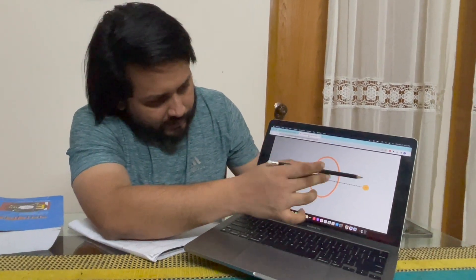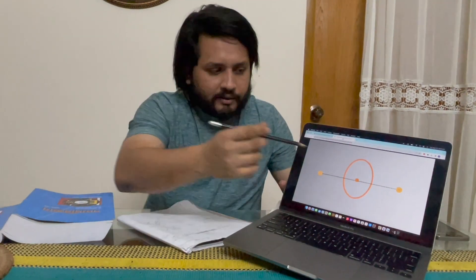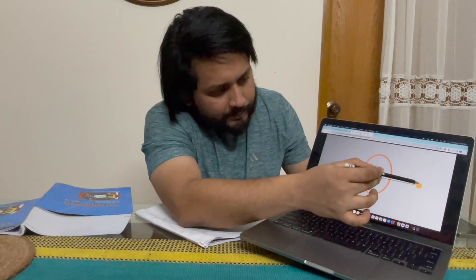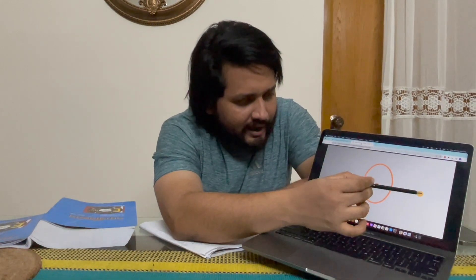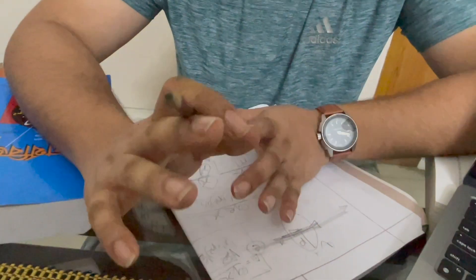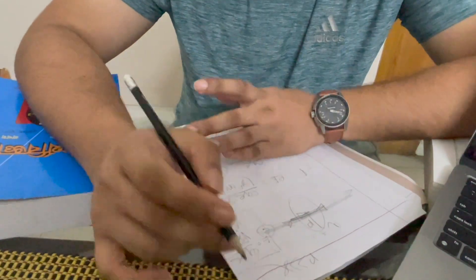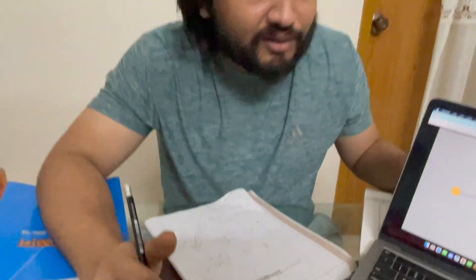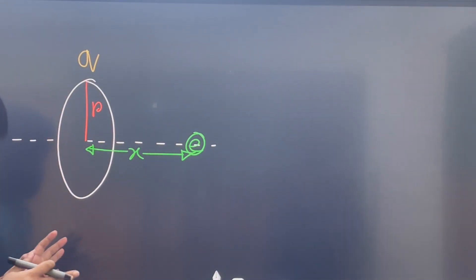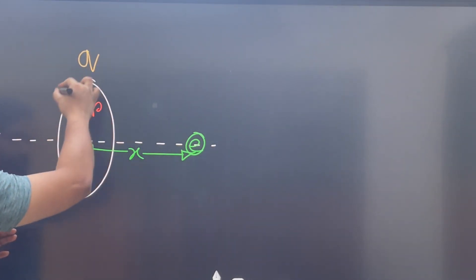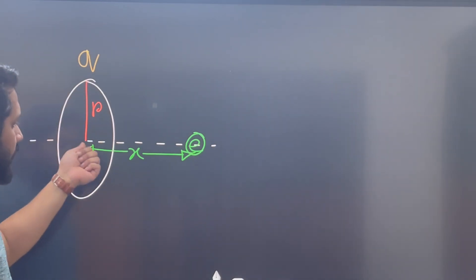It has a charge. So basically, we need to consider small charge elements dq on the ring. The problem is that the ring is charged with charge Q and radius R. We will know that the ring is positive.